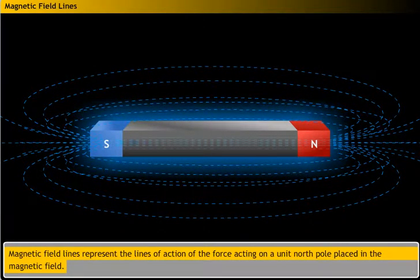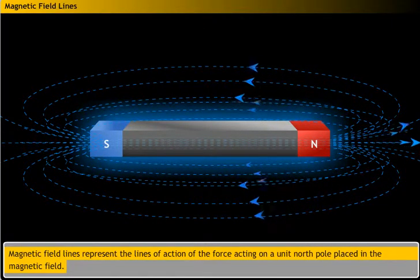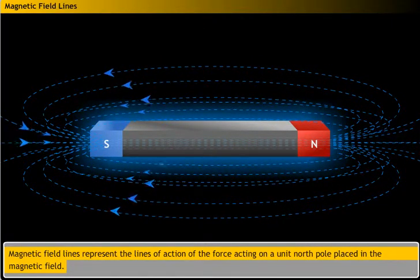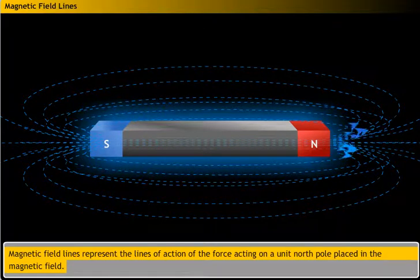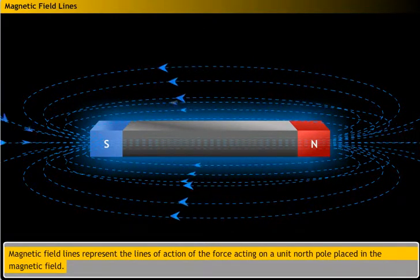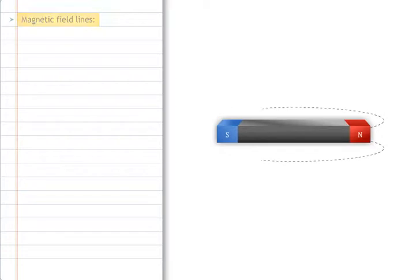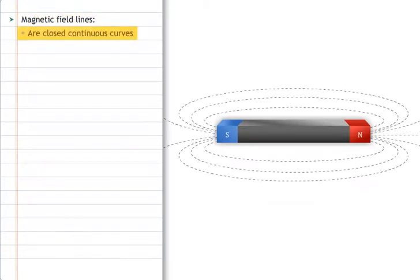Magnetic field lines represent the lines of action of the force acting on a unit north pole placed in the magnetic field. Magnetic field lines are closed continuous curves.